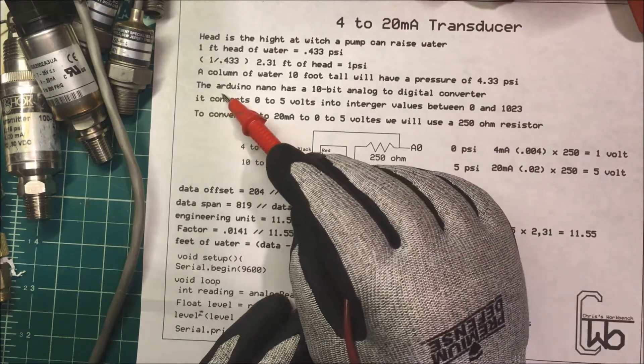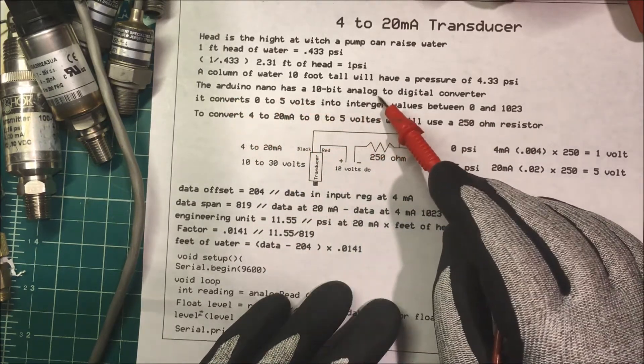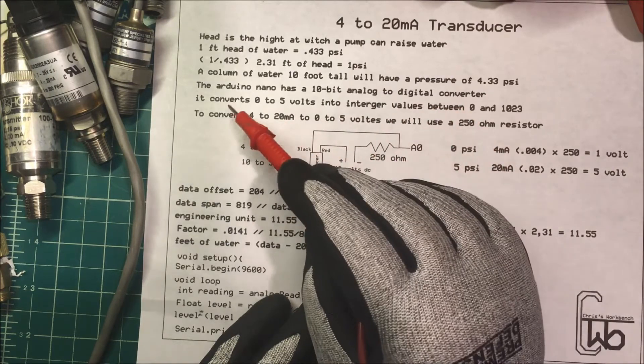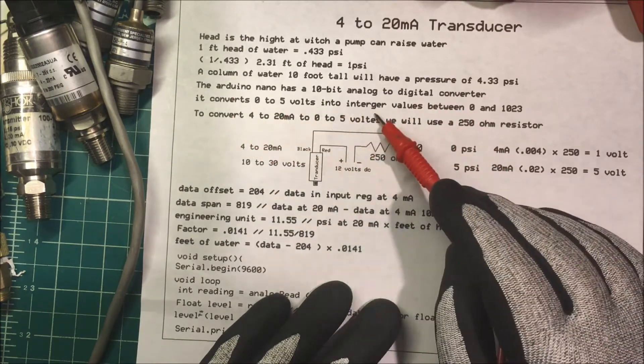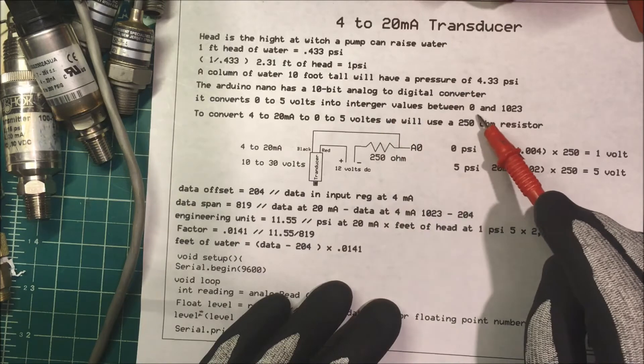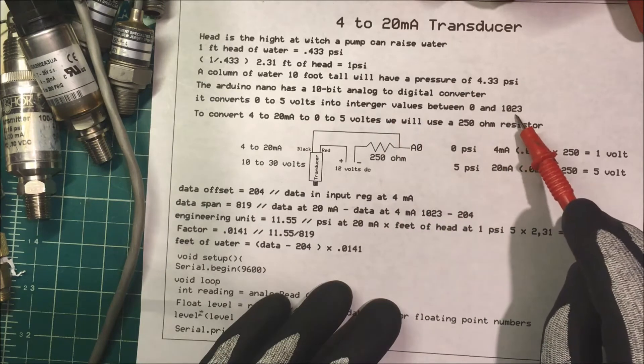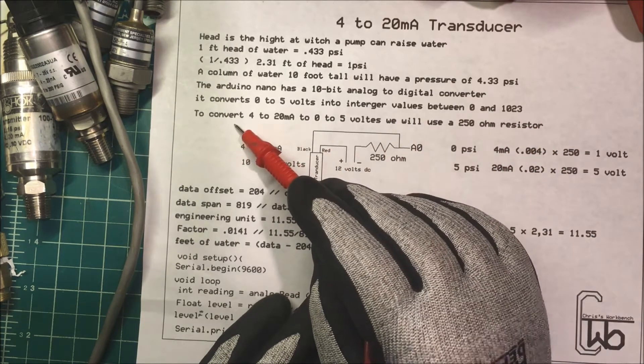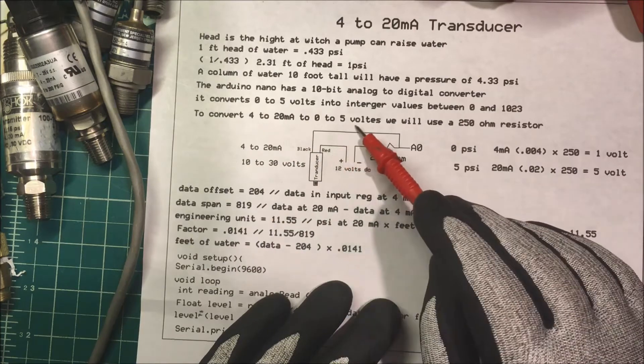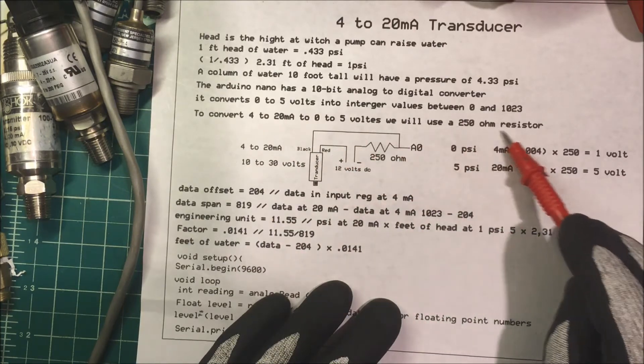So now the Arduino Nano has a 10-bit analog to digital converter and it converts 0 to 5 volts into integer values between 0 and 1023. So to convert 4 to 20 milliamps to 0 to 5 volts, we'll use a 250 ohm resistor.